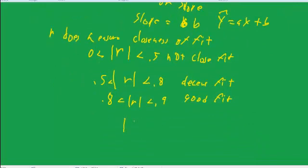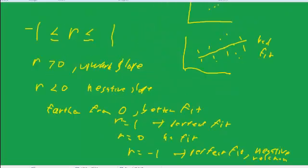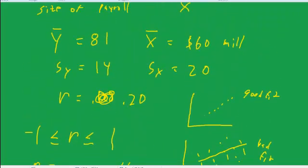And typically, if r is, again, an absolute value, so it could be either greater than 0.9 or less than negative 0.9, we call it a very good fit. So back in my made up example up here, we would say that there's, with an r of 0.20, that's not such a great fit.